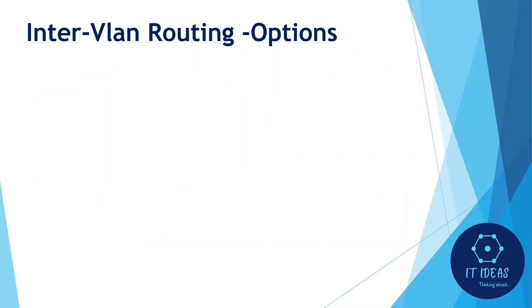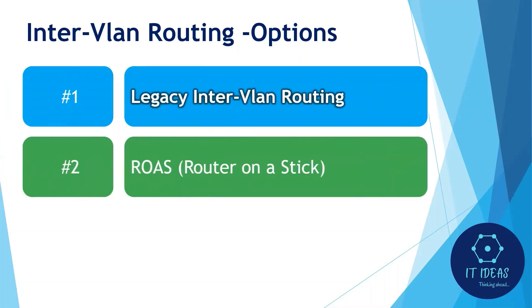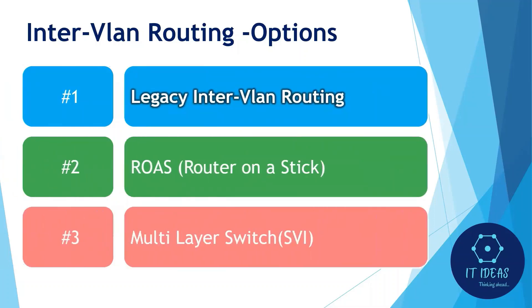In this slide we will see the three available options to enable inter-VLAN routing. The first one is legacy inter-VLAN routing, the next one is the router-on-a-stick method, and finally the multi-layer switch method.